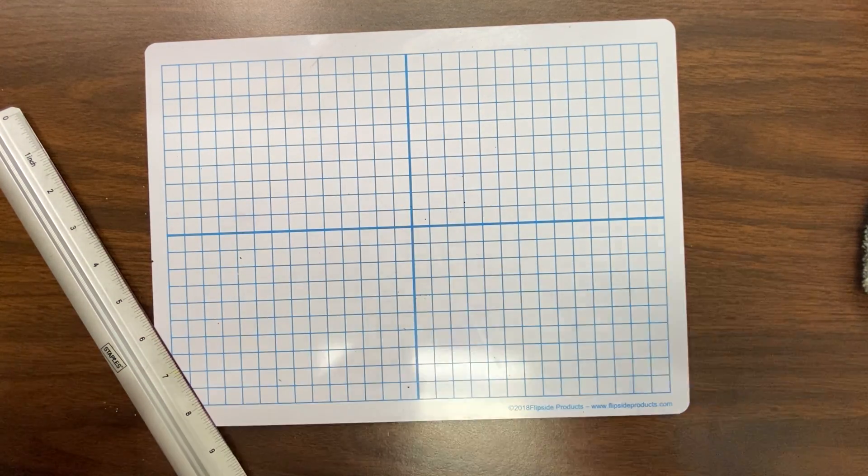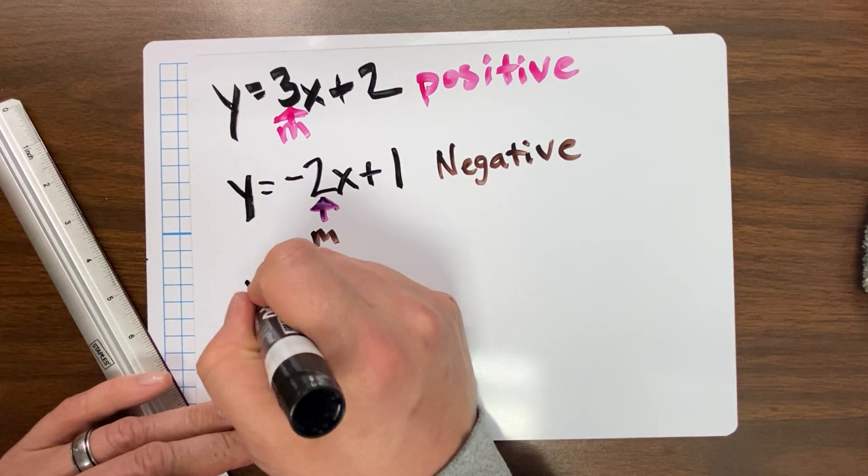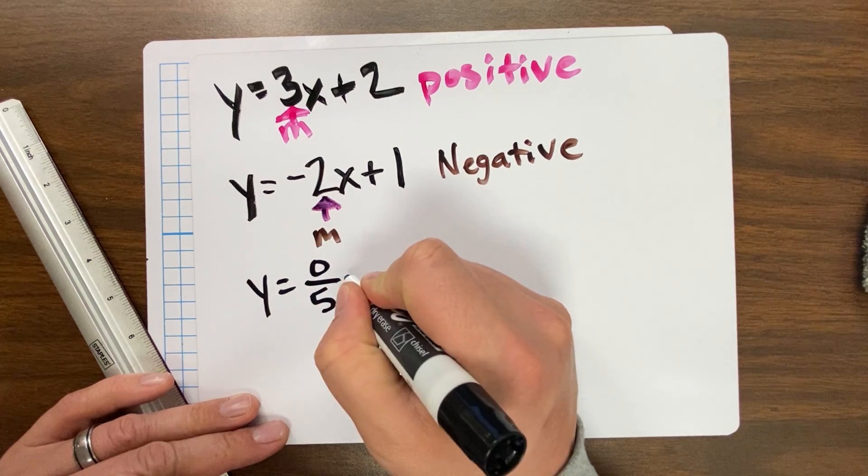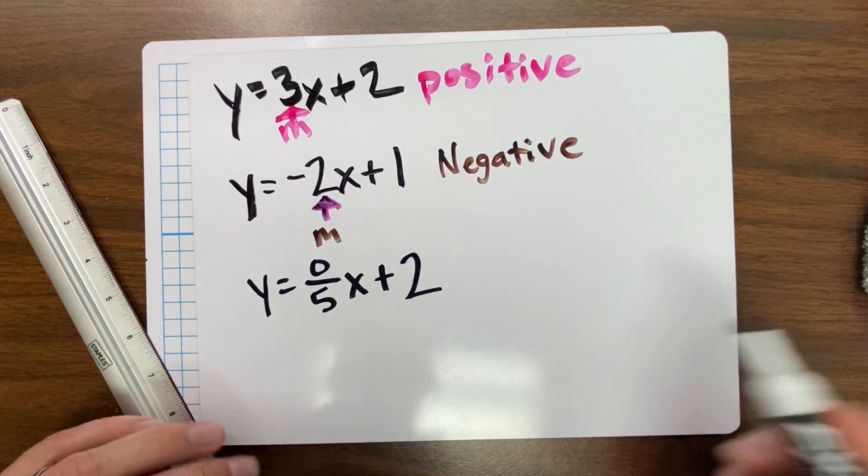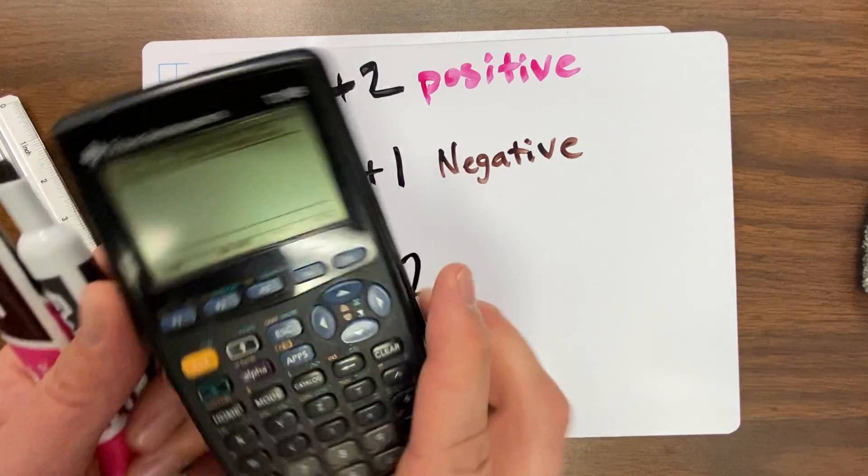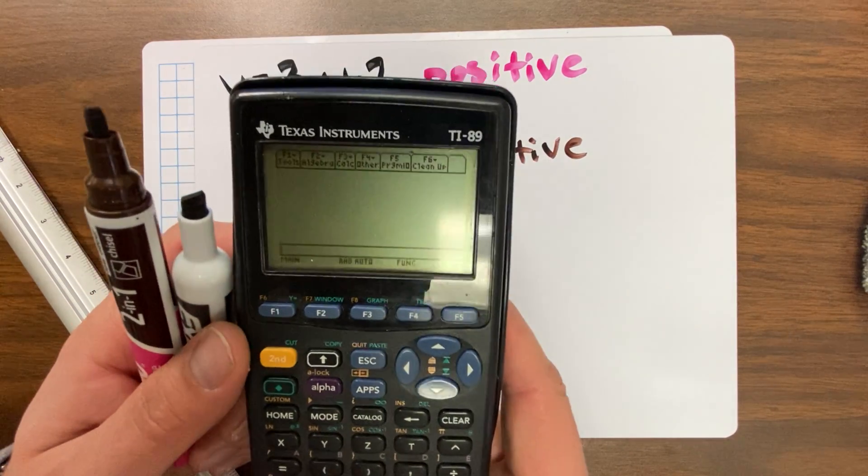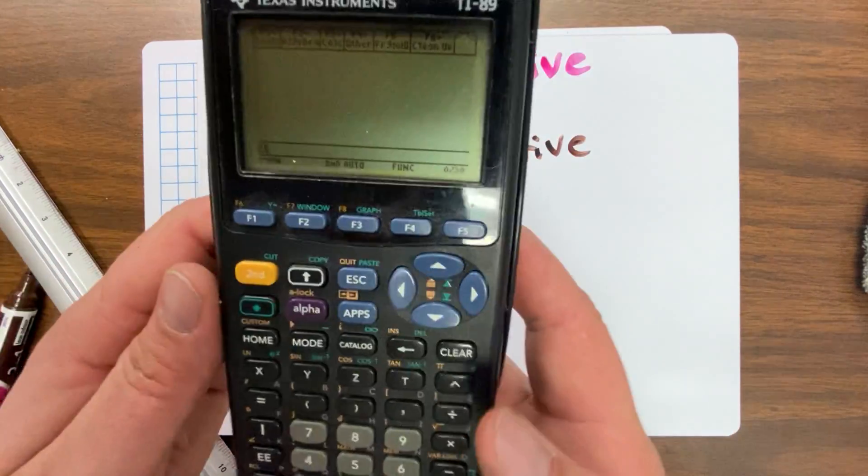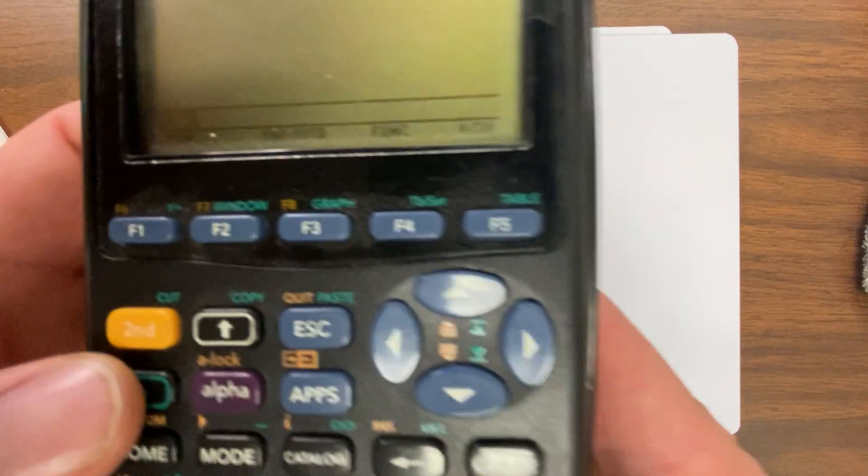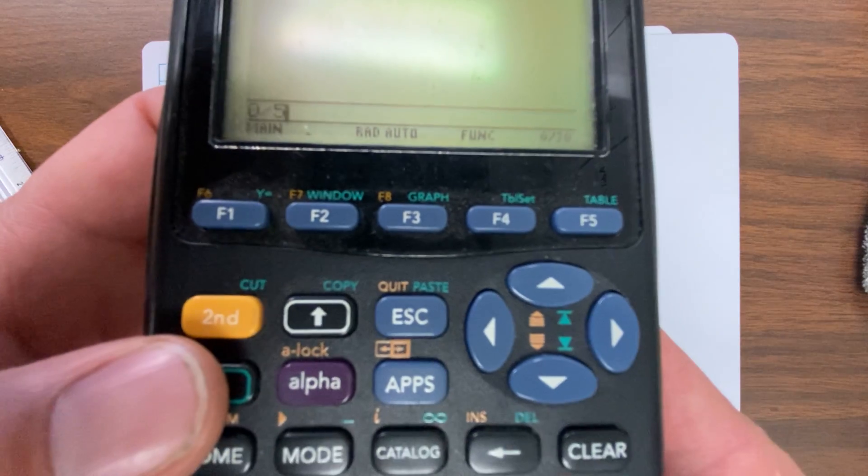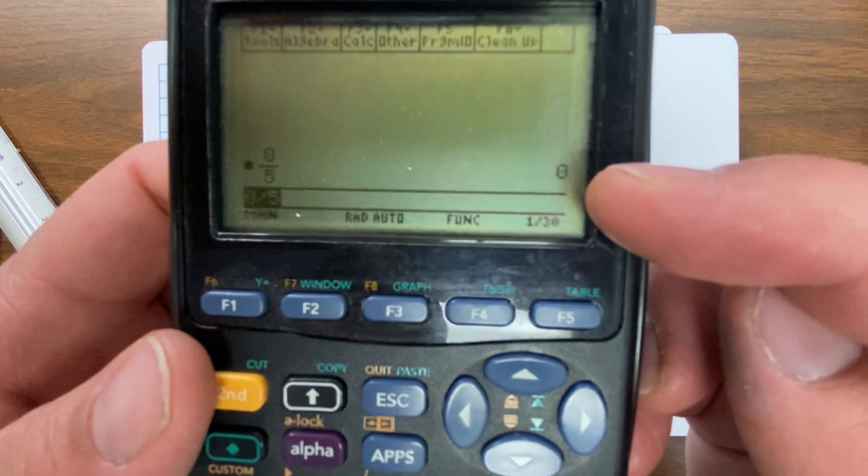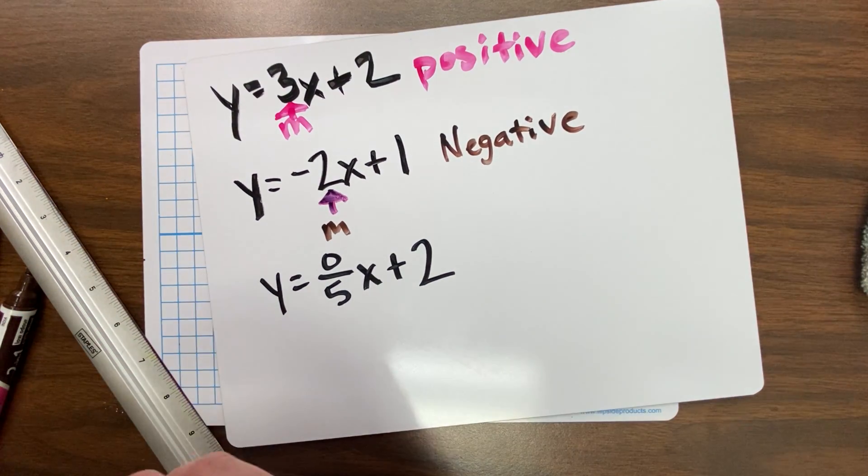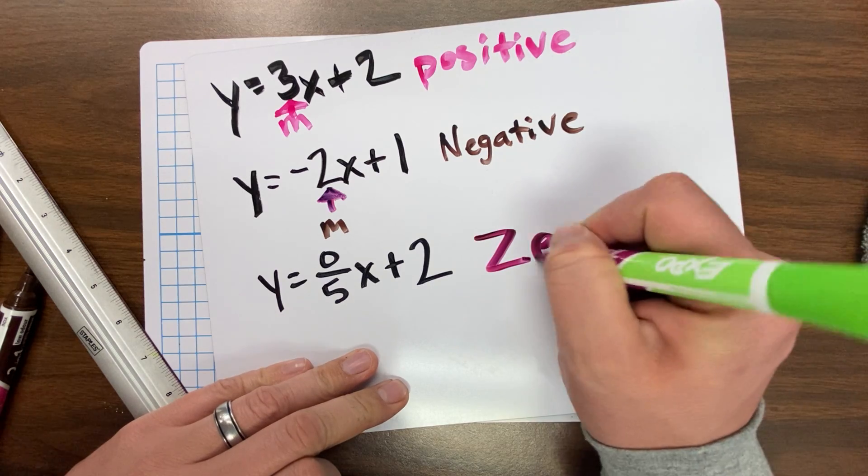Now here are the two that kind of confuse people. If I said y equals, let's go 0 over 5x plus 2. 0 divided by 5. If I were to take my, I have a fancy calculator, just bragging right now. And I type in 0. If you look, it's going to all pop up down here. Divided by 5 is my slope. And press enter. 0 divided by anything is 0. So now if I were to take that, that slope is called a 0 slope.